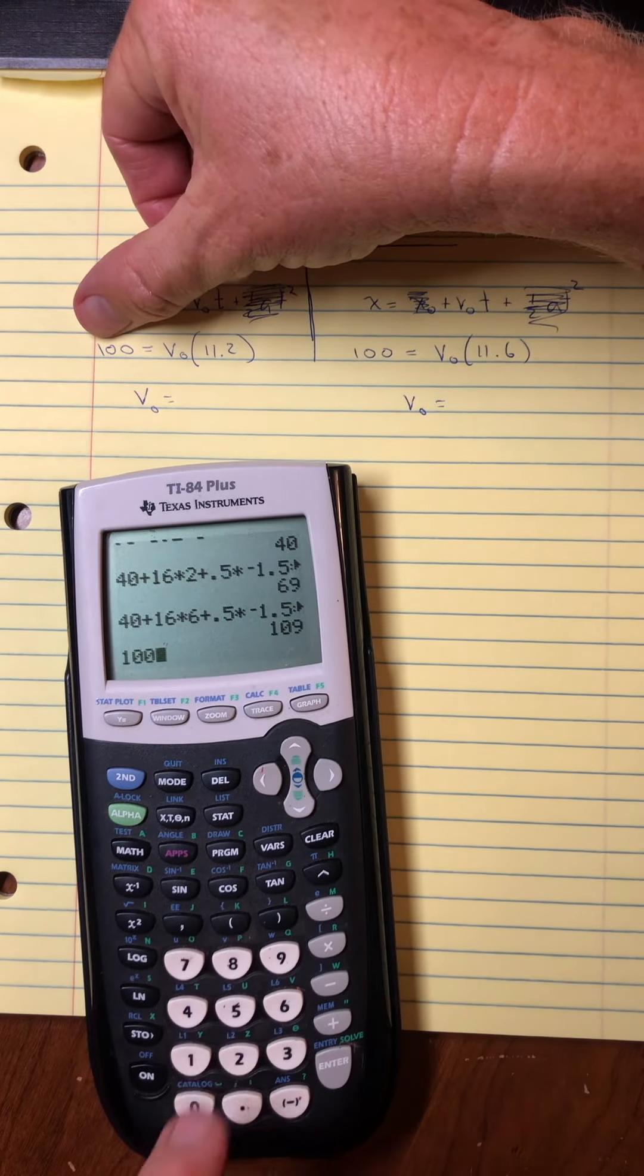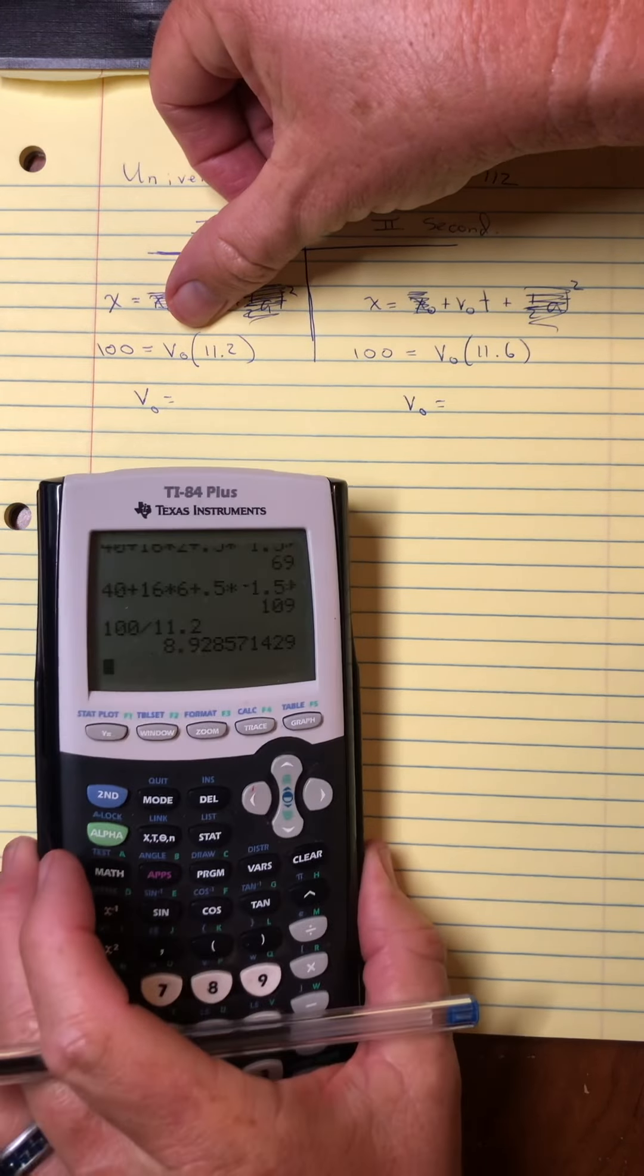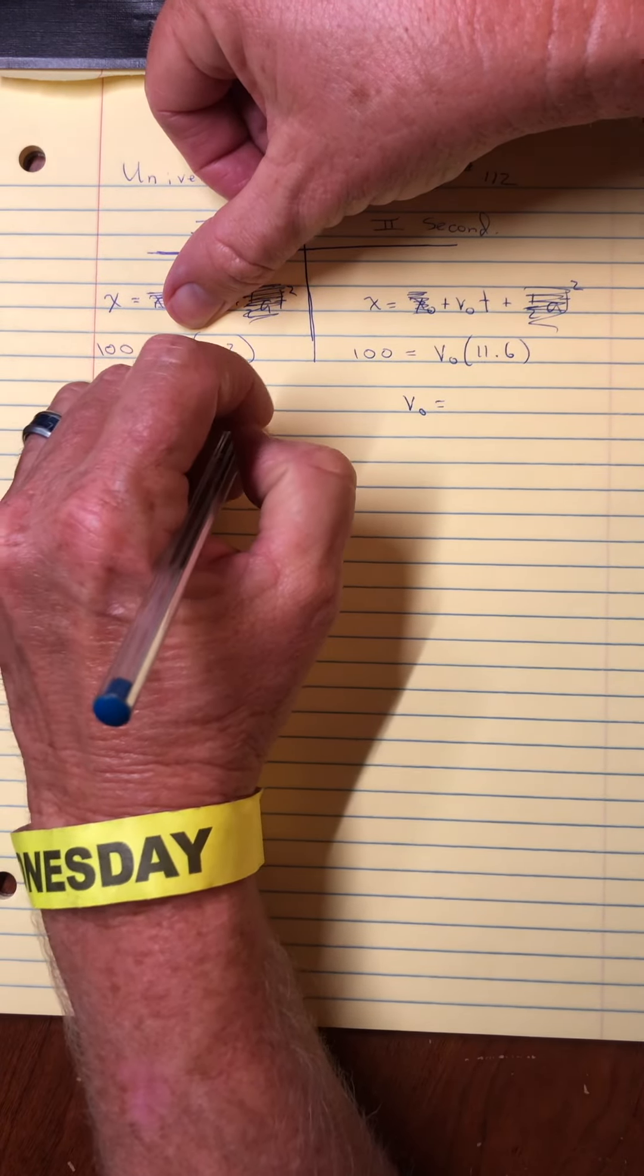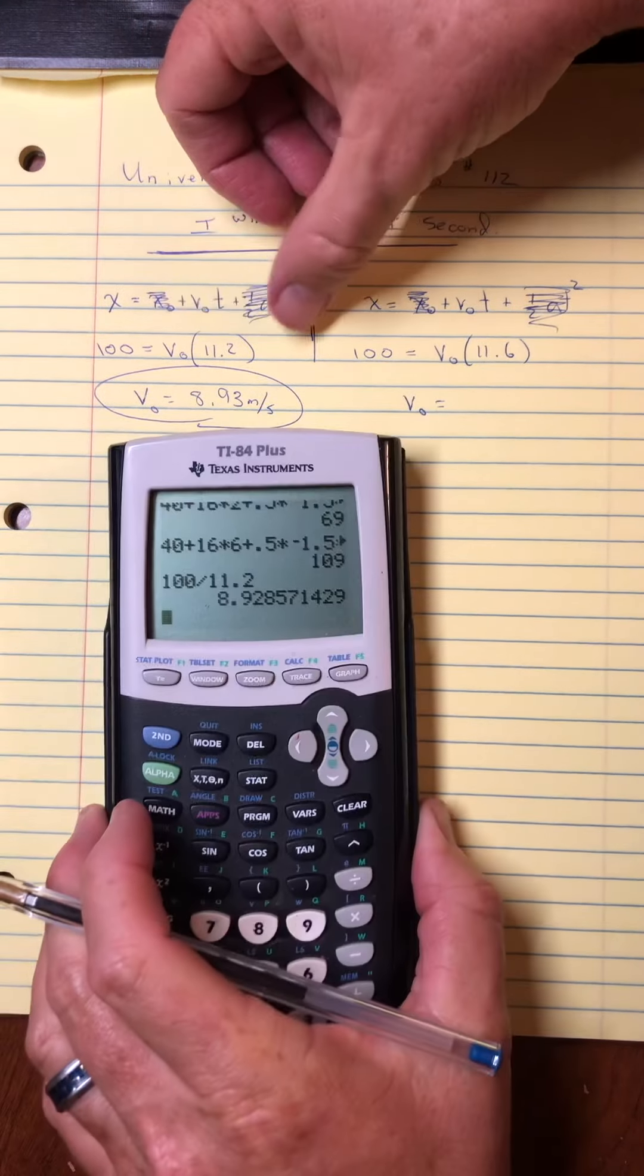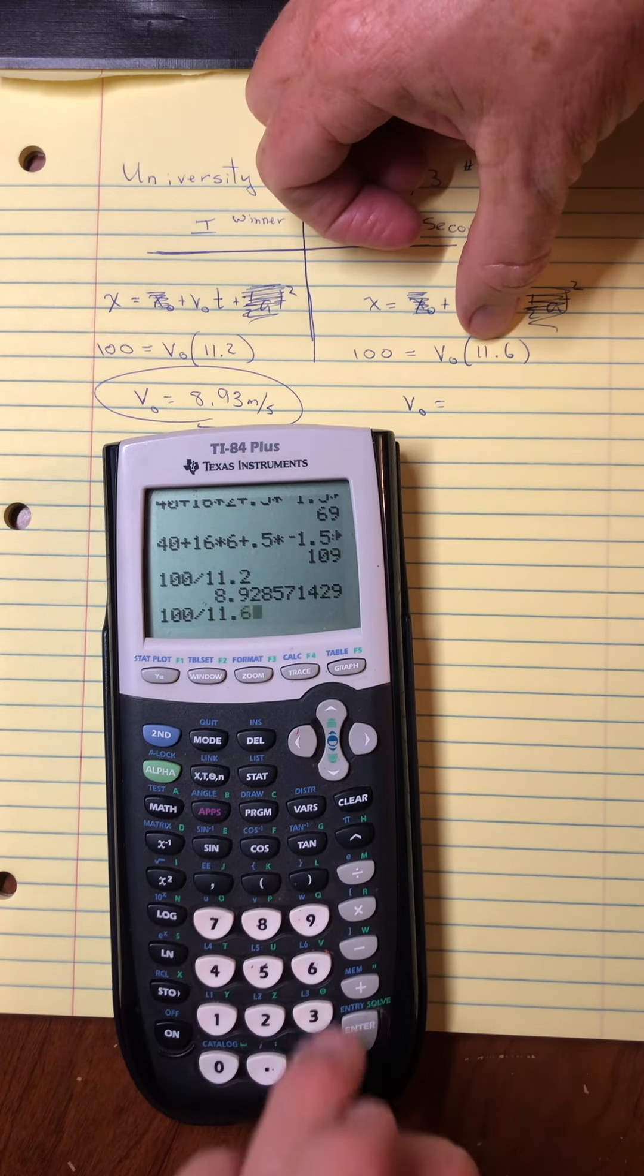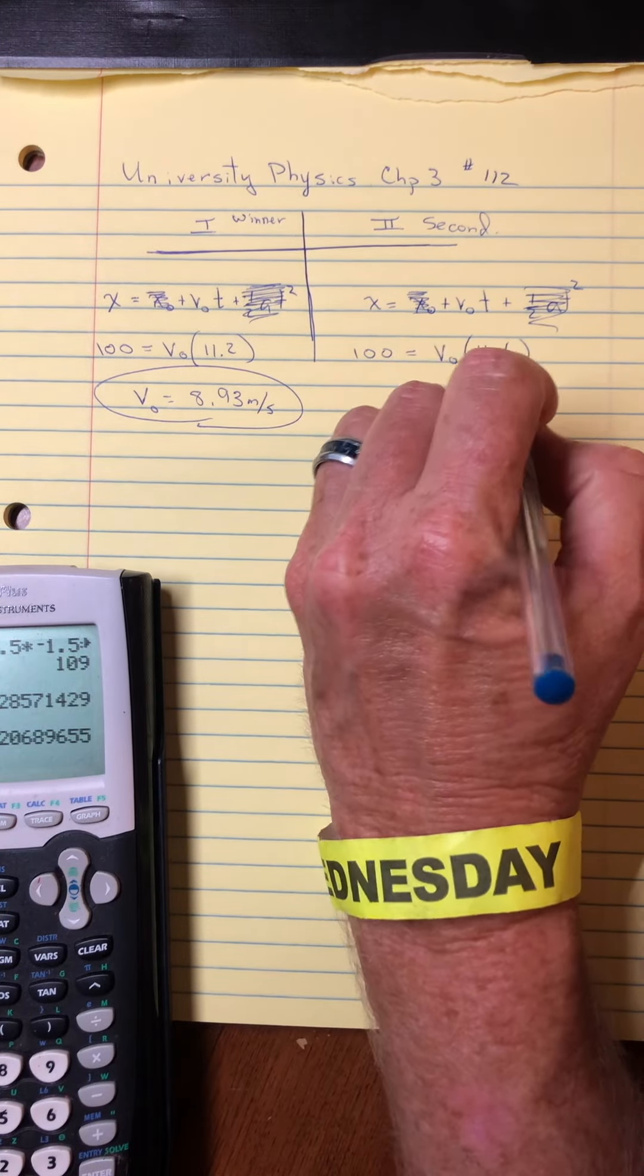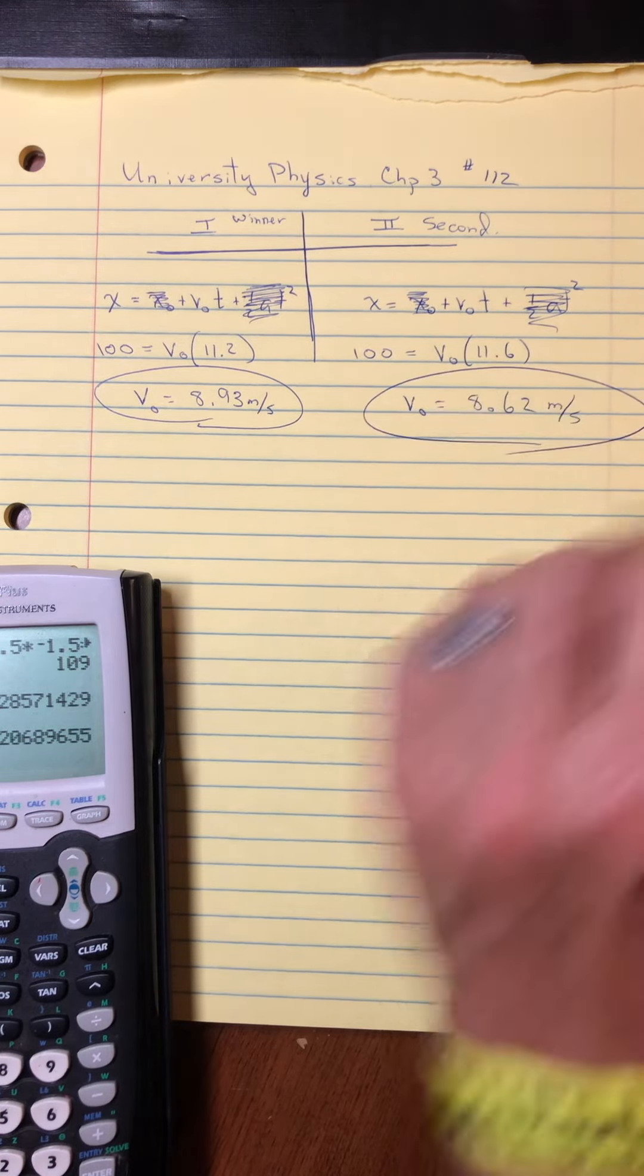So for the winner, it's going to be a little faster. Makes sense. That's why they're the winner. And we get 8.93 meters per second. And for the second place, 100 divided by 11.6. And we are a little slower. Again, makes sense. That's why they got second place at 8.62 meters per second.